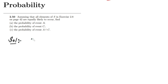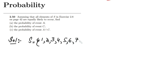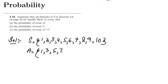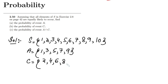Let me define the sample space. In this sample space I have different numbers ranging from 1 to 10: 1, 2, 3, 4, 5, 6, 7, 8, 9, and 10. Set A is composed of all the odd numbers between 1 and 10, so those are 1, 3, 5, 7, and 9. And let C equal all the even numbers between 1 and 10, so those are 2, 4, 6, 8, and 10.